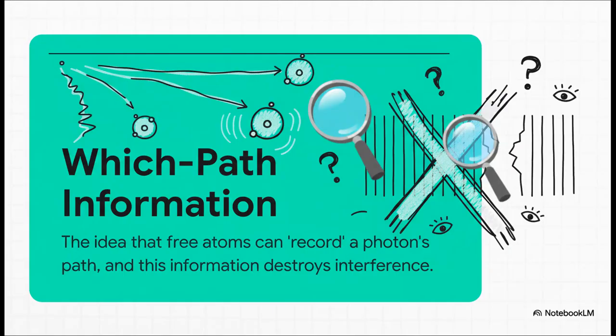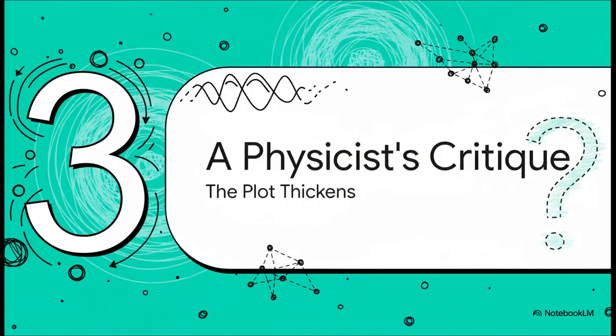Okay, so here's the official story from the research team. It all comes down to this idea called Which Path Information. They say that when those atoms are free to move, their recoil acts like a tiny little recording. It records which path the photon took. And here's their big conclusion. The mere existence of that information, whether we actually look at it or not, is what actively reaches in and destroys the quantum interference. That's the whole information-kills-interference story. But is that the only way to see it?